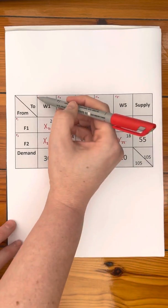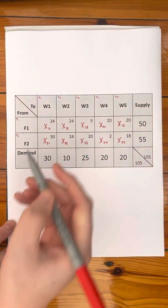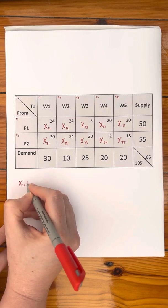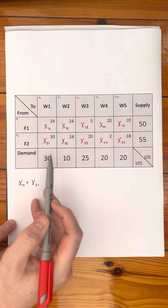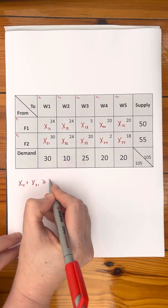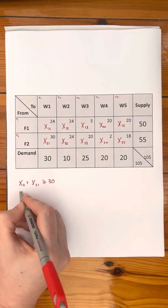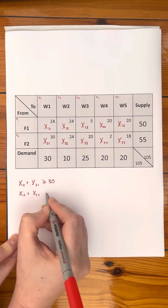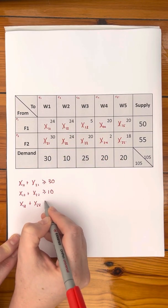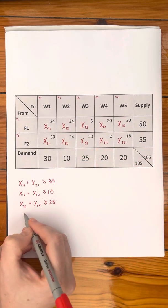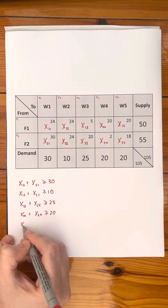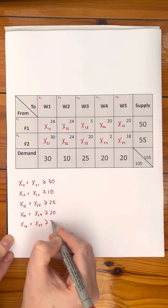Every single column is a demand constraint. You can read it as X1-1 plus X2-1 — it's a demand, so you need at least 30 to be sent or transported, so greater than or equal to 30. Then the second column: X1-2 plus X2-2 is greater than or equal to 10. X1-3 plus X2-3 is greater than or equal to 25. X1-4 plus X2-4 is greater than or equal to 20. X1-5 plus X2-5 is greater than or equal to 20.